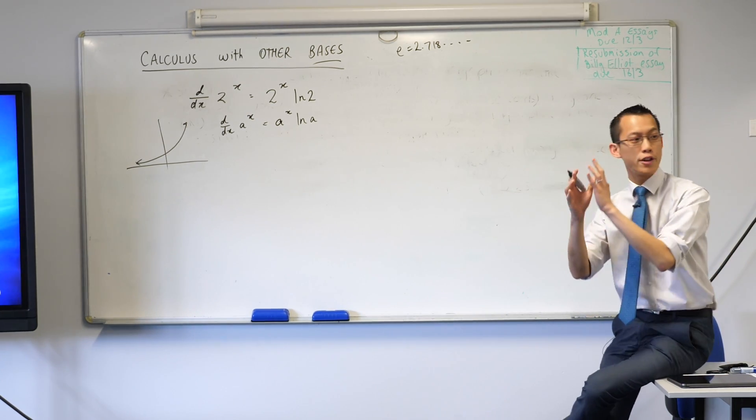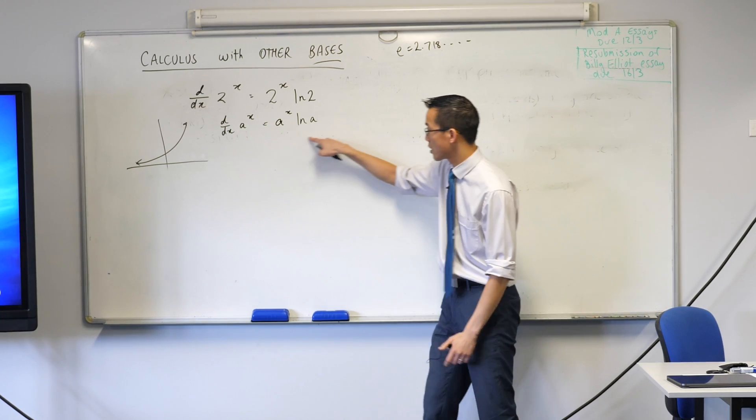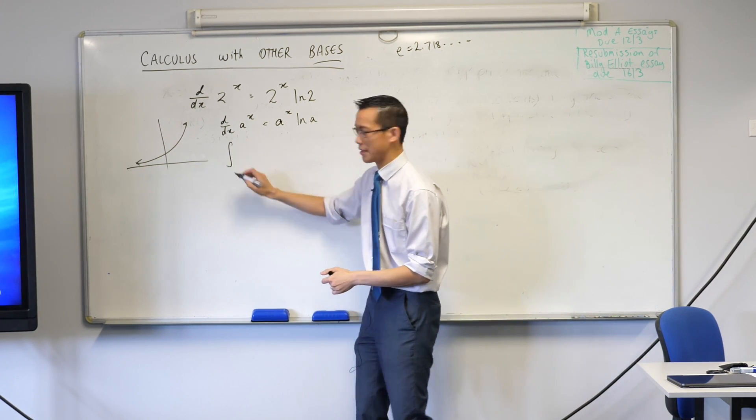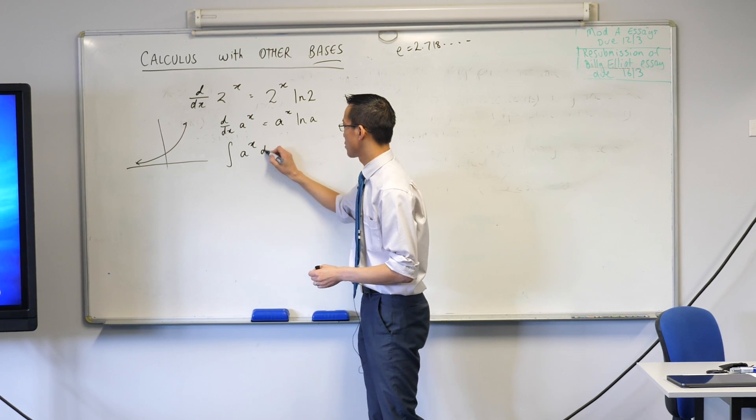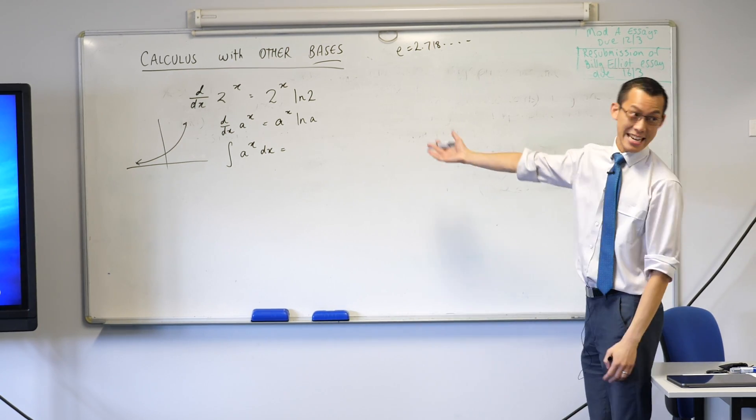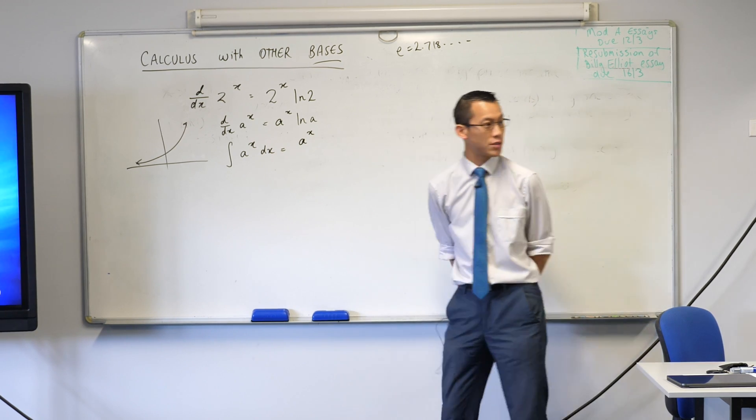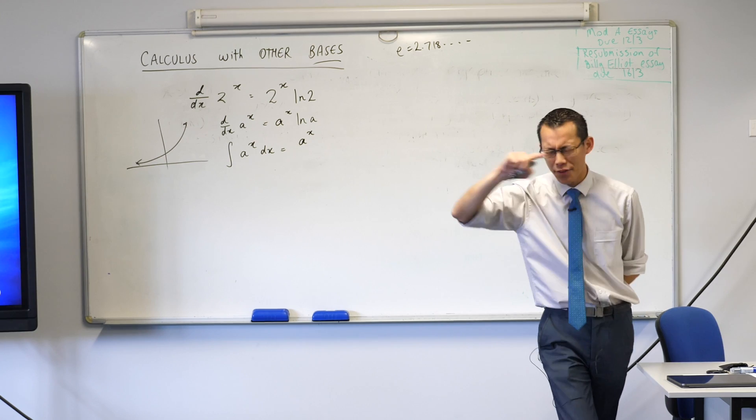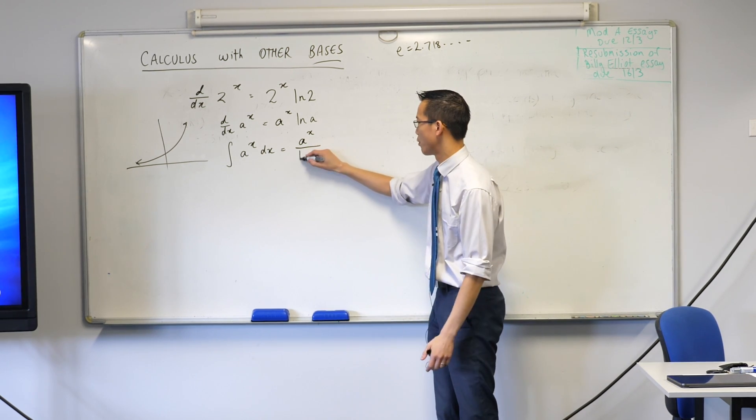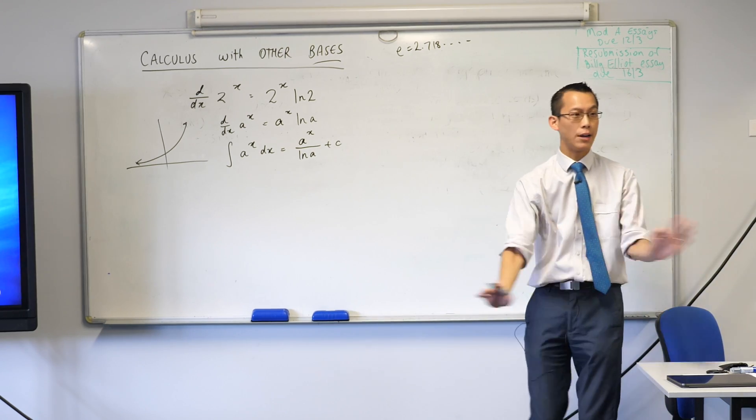We're in integral calculus land now, right? So I'm interested in what happens when we integrate such results. Now thankfully, this result here paves the way for us because we know integration is the opposite of differentiation. So if I integrate a to the x dx, just like differentiating an exponential gives you a different exponential, well, integrating an exponential will give you a different exponential. It's going to start off looking much the same. When we differentiated, we multiplied by log a. So this time we're going to divide by log a. That'll undo the differentiation you saw before. Not to forget, this is of course an integral, so the last thing we need is our constant of integration plus c and we're done.